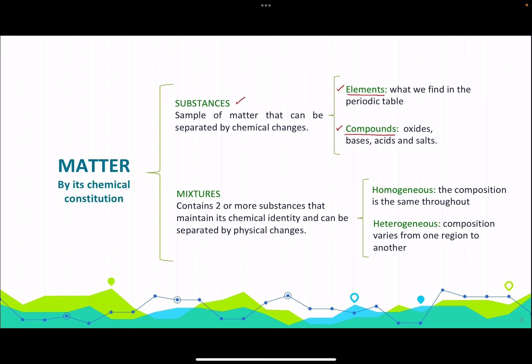Examples of compounds include oxides, bases, acids, and salts. On the other hand, we have mixtures. Mixtures contain two or more substances that maintain their chemical identity and can be separated by physical changes — remember that substances can only be separated by chemical changes.